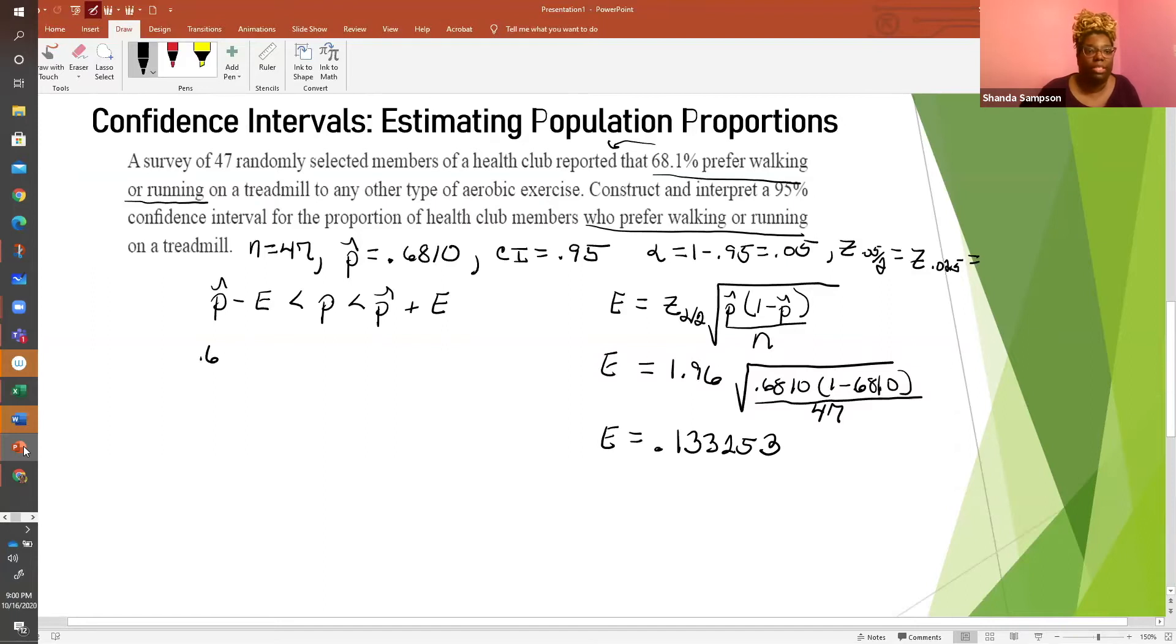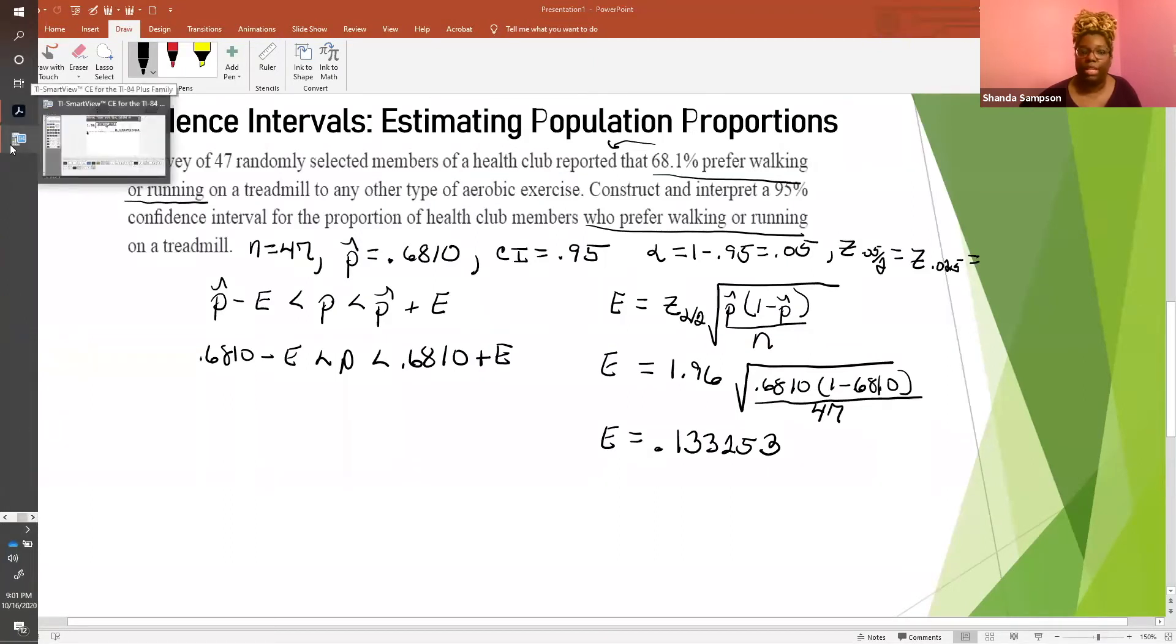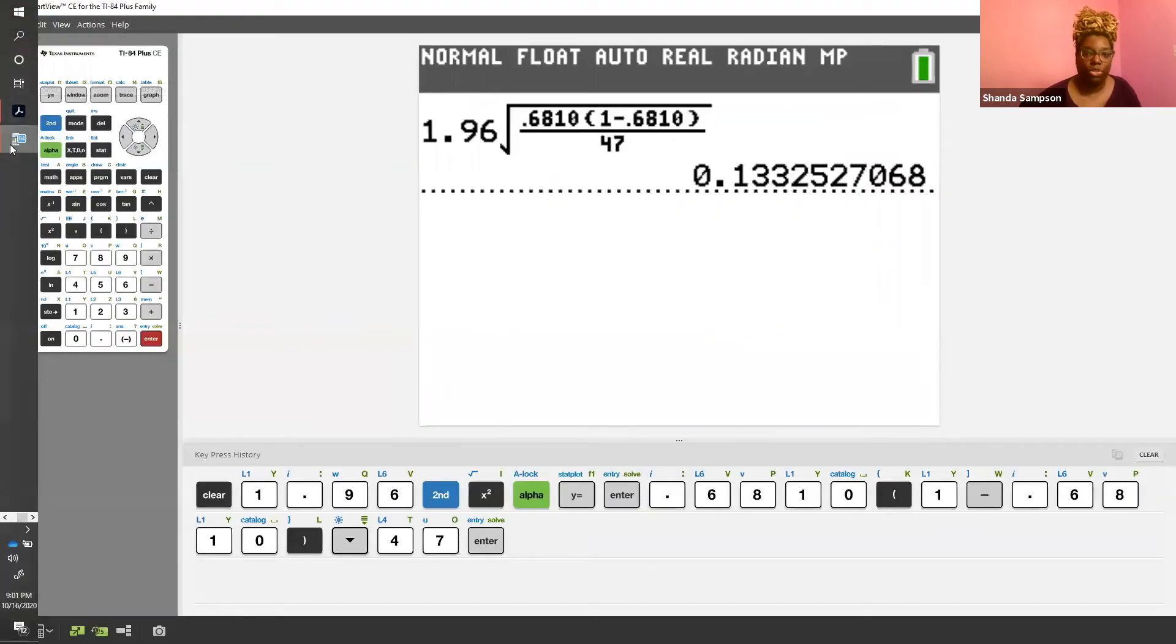We have our P hat 0.6810 minus E is less than P is less than 0.6810 plus E. Let's go in our calculator. You don't need to add these to it. Go into your calculator so you can figure out the appropriate answer. Remember, the calculator is going to carry all of the decimals. That's why you need to go in the calculator. This is just written so that you have work to show.